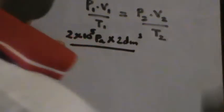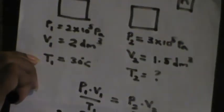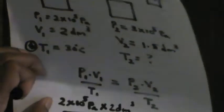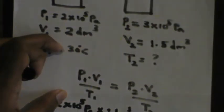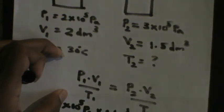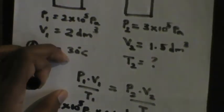Now for T1, this is a very important point: T1 must be the absolute temperature. I've given the Celsius temperature, so I need to convert it to Kelvin by adding 273. So 30 degrees Celsius is 303 Kelvin. T1 equals 303 Kelvin.